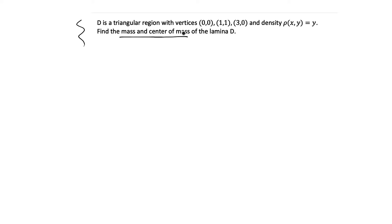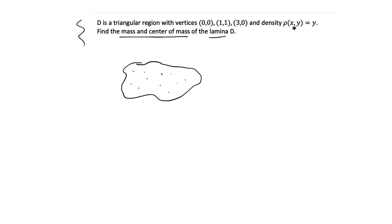This is a problem for finding mass and center of mass of a two-dimensional figure called a lamina. A lamina is basically a thin plate — so thin that you consider it a two-dimensional object. At any point on that object the lamina has a certain density ρ, so there's a variable density across the lamina. We need to find the total mass given the shape, which is a triangle, and the formula for the variable density. We'll find the mass first, then find the center of mass — the point at which you'd have to balance the lamina on a fulcrum so it wouldn't fall.